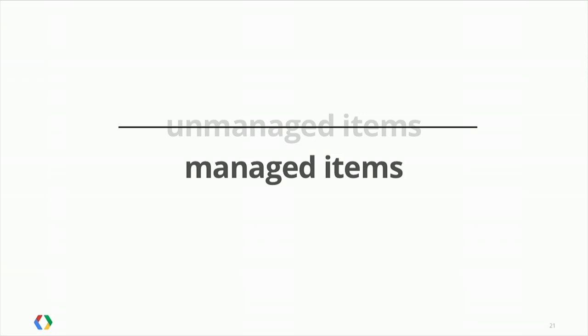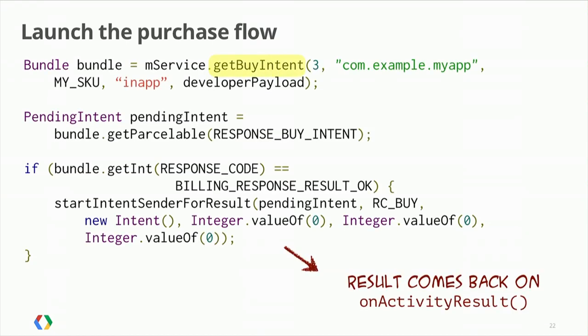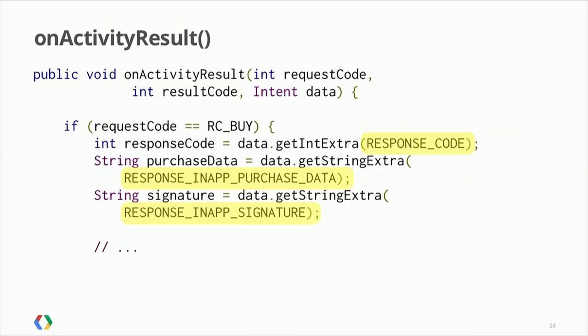Going back to code: how do you write this reliable purchase flow? First, you launch the purchase screen by calling getBuyIntent. That gets you a ready-to-use intent that you can then fire, bringing up the purchase screen. For example, in my game Nostalgic Racer, the user can purchase 1,000 Nostalgic coins. The dialog is simple and to the point — the user doesn't lose context because it's overlaid on top of the game, and there's really only one button. The result of that dialog, when the user clicks Buy, comes through onActivityResult, where you have the response code, purchase data, and purchase signature.